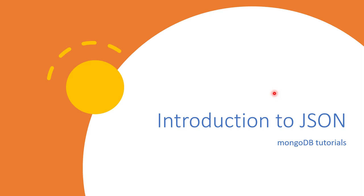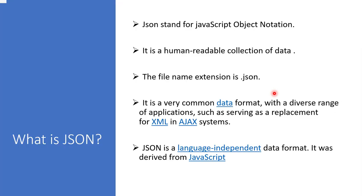In this tutorial we will learn what is JSON and what is its importance in MongoDB. JSON stands for JavaScript Object Notation and it's a human-readable collection of data. It is in a text format you can easily read it. If you save a JSON file you have to save it with the .json format. It is a very common data format and it has a large range of applications which it supports.